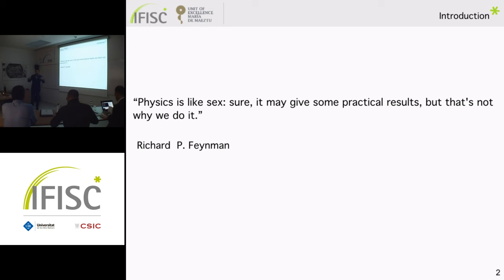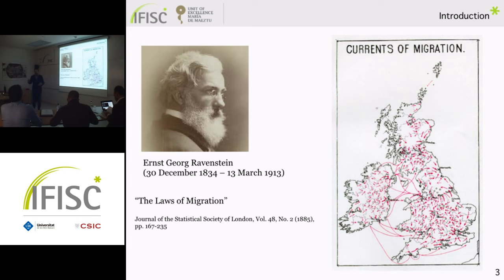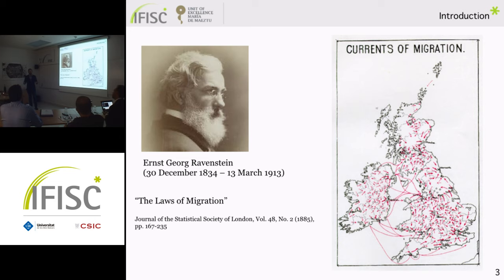The interest in studying human mobility is much older than these concerns. One can identify George Ravenstein as one of the first to study human mobility, trying to outline a series of laws or general patterns on migration in the UK. He showed that females were more migratory than males, and that rural inhabitants were more migratory than those in urban areas.